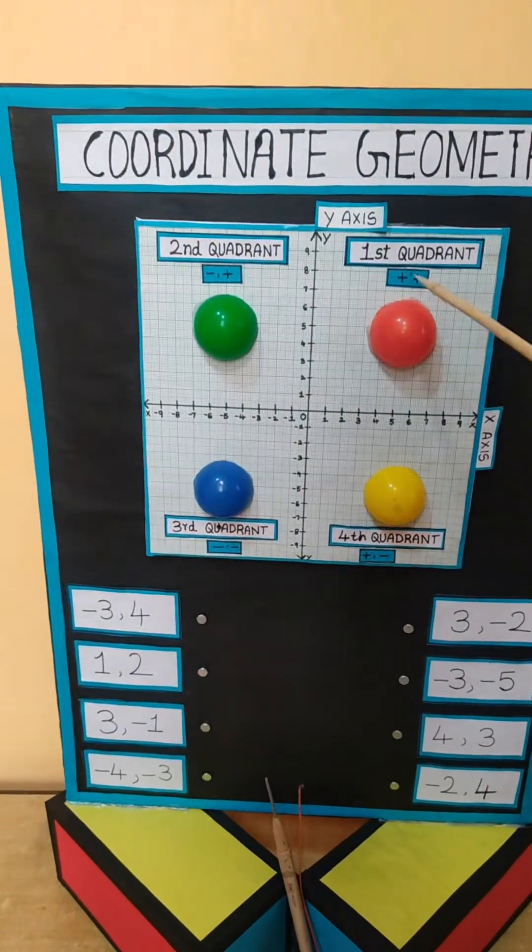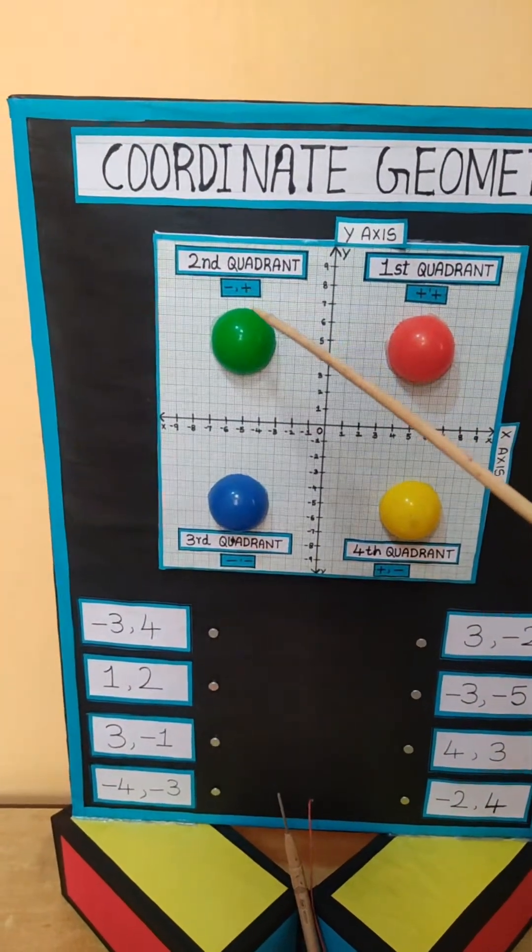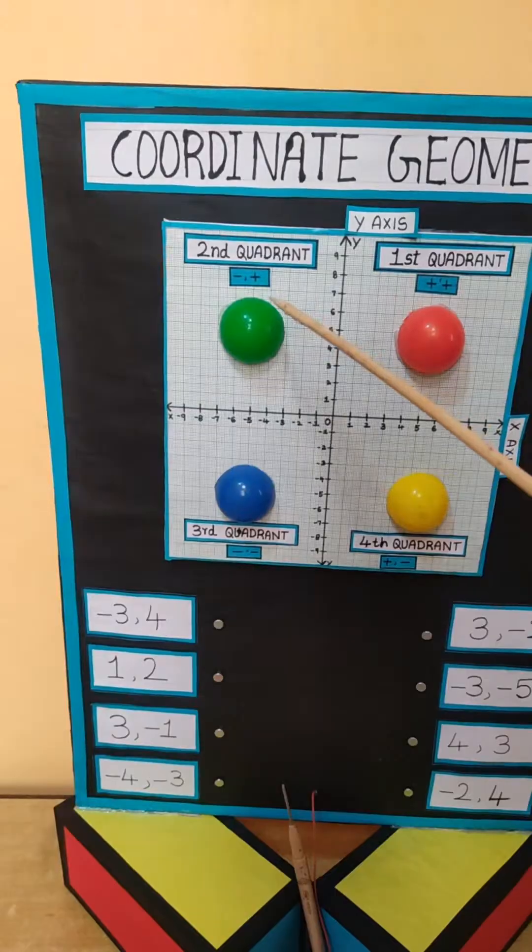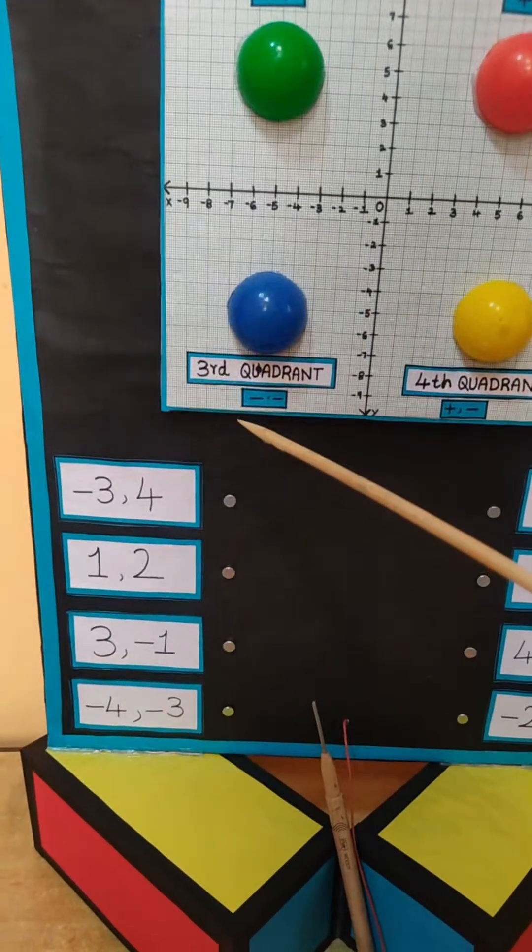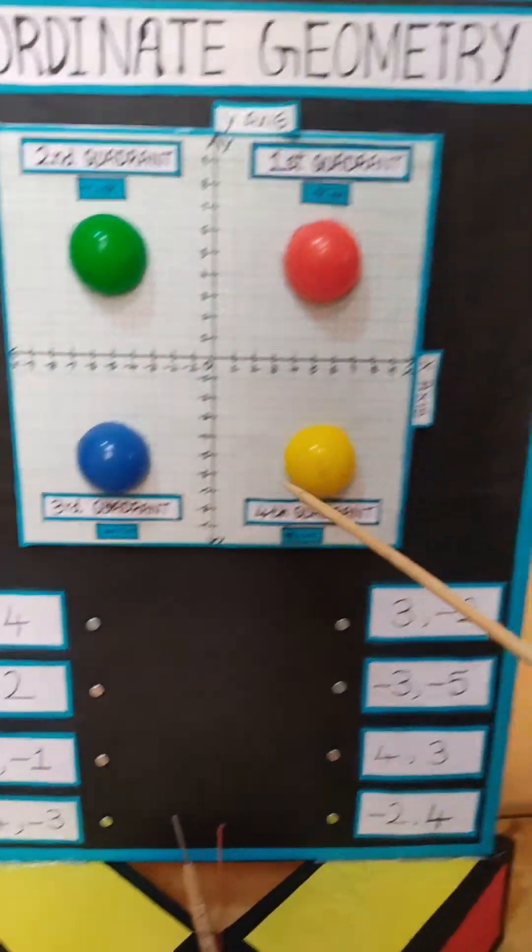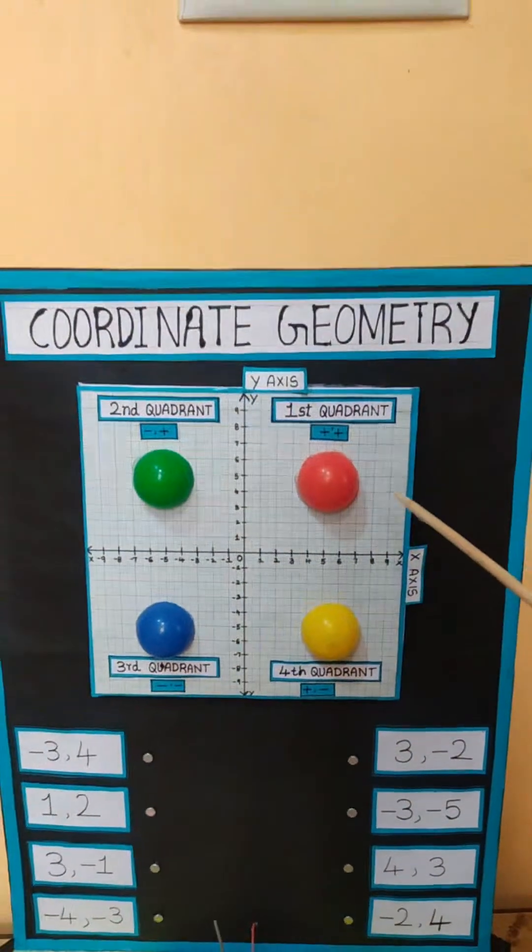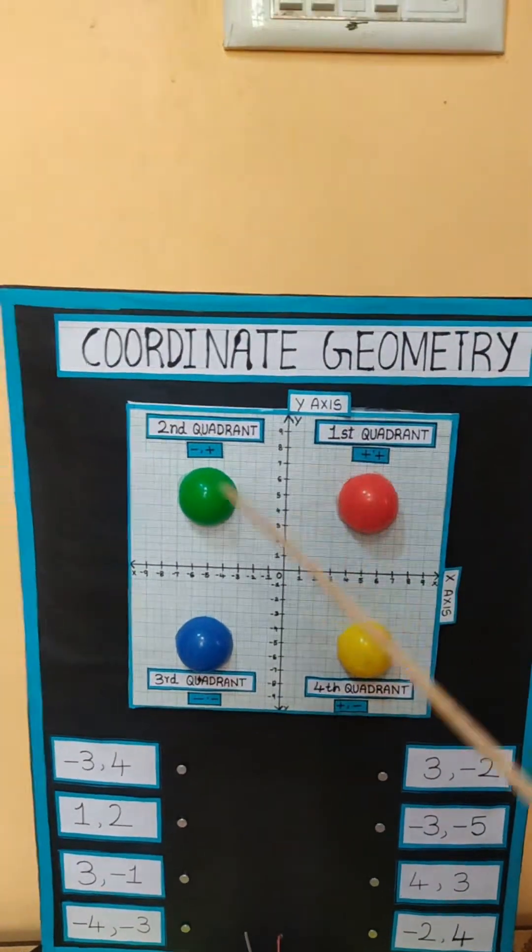This is the first quadrant which has plus plus, so x and y are both positive. The second quadrant is minus plus, the third quadrant is minus minus, and the fourth quadrant is plus minus. The quadrants are written in anti-clockwise direction.